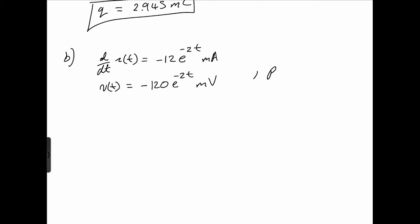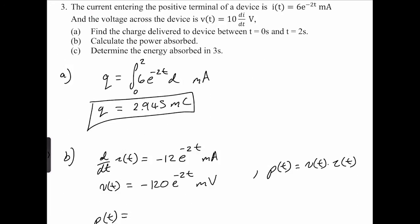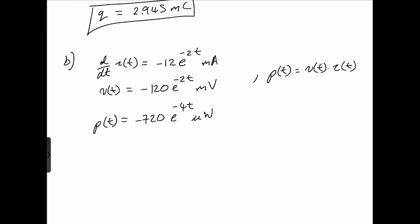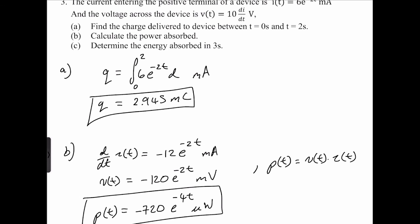The power p(t) = v(t) × i(t) = (−120e^(−2t)) × 6e^(−2t) = −720e^(−4t) microwatts. Milli times milli gives micro units. Since they didn't ask for power at a specific time, we leave it as the equation for the power absorbed.